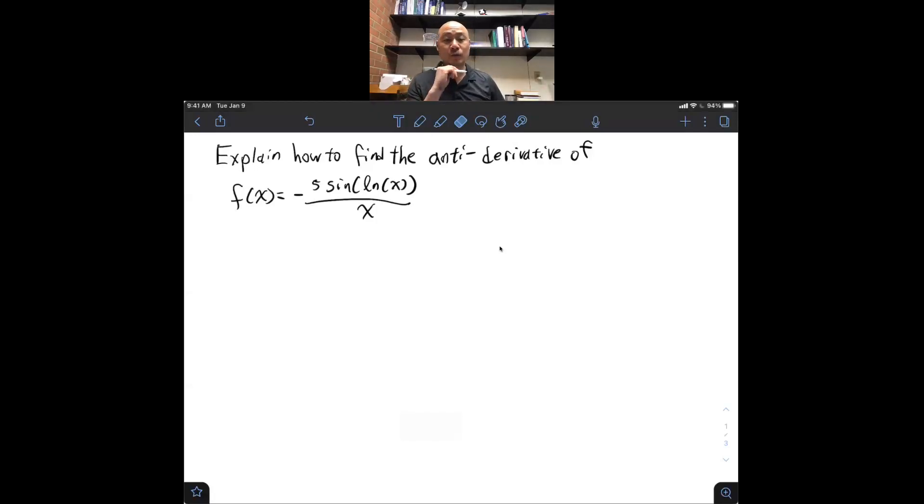Hi. In this video, we are going to be taking a look at the substitution method of anti-differentiating and integrating. This is a two-part problem. In the first part, we're asked to explain how we will find the anti-derivative of f of x equals minus 5 sine of log x over x.